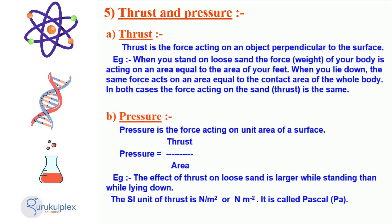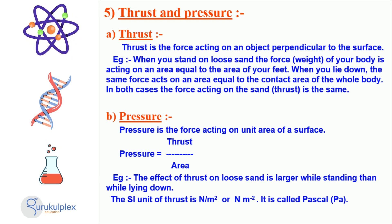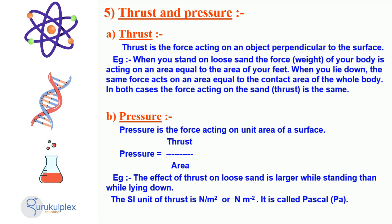Thrust is a force that acts on an object perpendicular to a surface. Pressure is the force that acts on a unit area of a surface. Both thrust and pressure are related to the force of an object on a surface. When standing on loose sand, the weight of a person's body acts on an area equal to the size of their feet, whereas when lying down, the same force acts on an area equal to the contact area of the entire body. In either case, the force acting on the sand is the same; however, the effect of thrust on loose sand is greater when standing than when lying down. The SI unit of thrust is Pascal, or N per square meter.